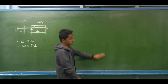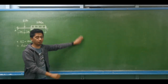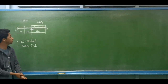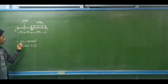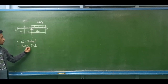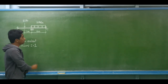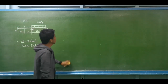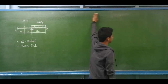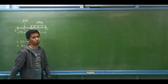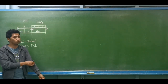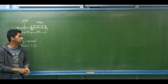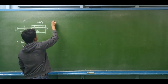Our next example will be for the moment distribution method. We have this beam problem. We assume the moment of inertia to be constant and equal to one unit. The factors needed for this method include the stiffness factor of all members.